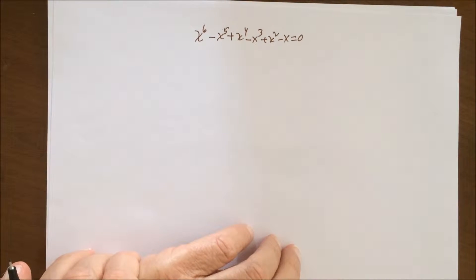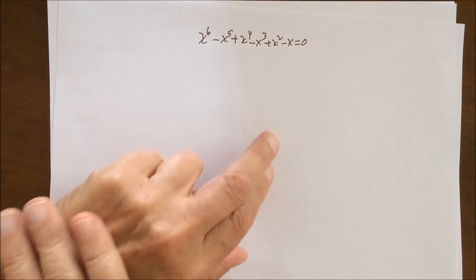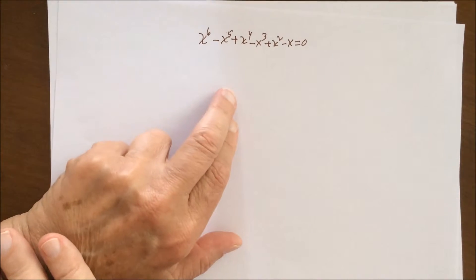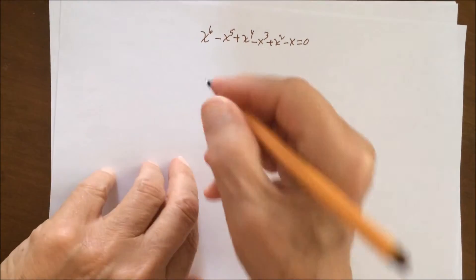However, we don't know whether they're all real numbers, imaginary numbers, or a combination of real and imaginary solutions. It is obvious that we can factor out the x term from this equation, so let's do that.